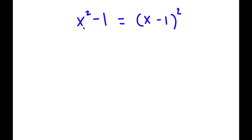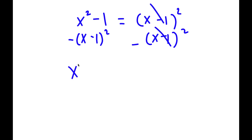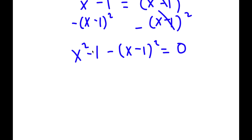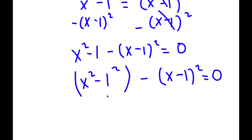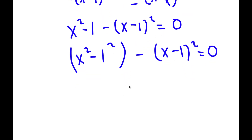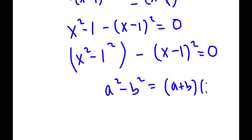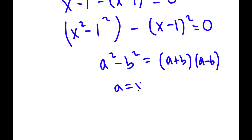In this problem I have x squared minus 1 equals (x minus 1) squared. To solve this, I'll subtract (x minus 1) squared from both sides — those cancel, giving x squared minus 1 minus (x minus 1) squared equals 0. Now x squared minus 1 I can rewrite as x squared minus 1 squared, since 1 equals 1 squared. Using the difference of squares formula a squared minus b squared equals (a plus b)(a minus b), here a is x and b is 1.